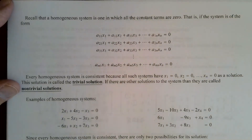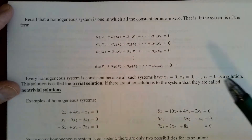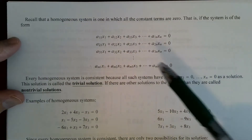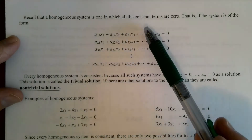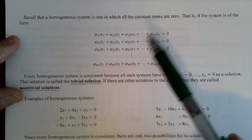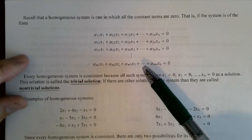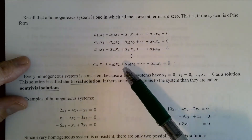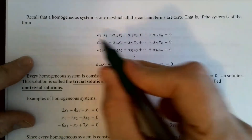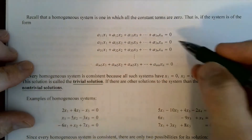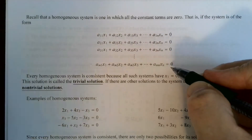One last thing I want to talk about when we are solving systems of linear equations: I want you to recall a homogeneous system — one in which all the constant terms are zero. So, a system of this form would be a homogeneous system of m equations in n unknowns, with n unknowns and m equations, and all constant terms equal to zero.